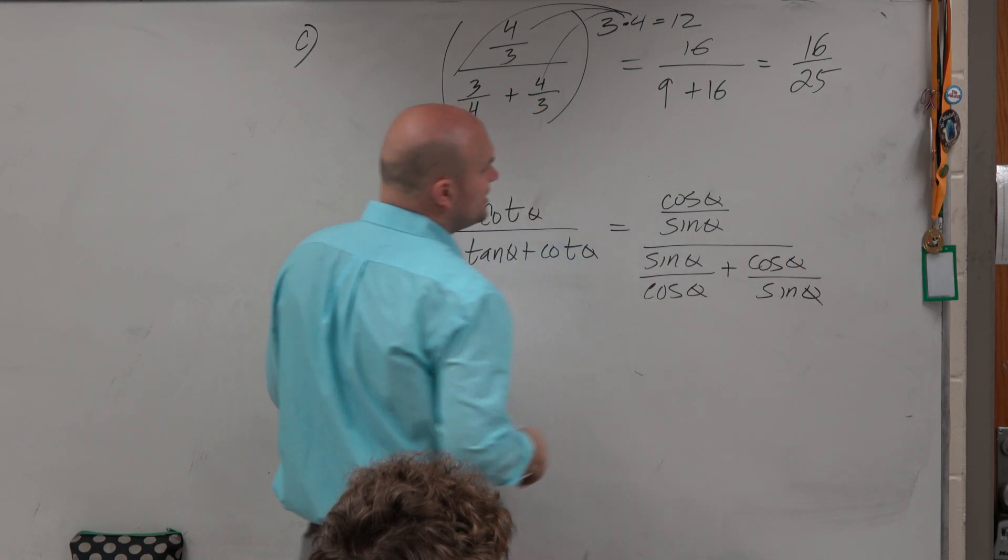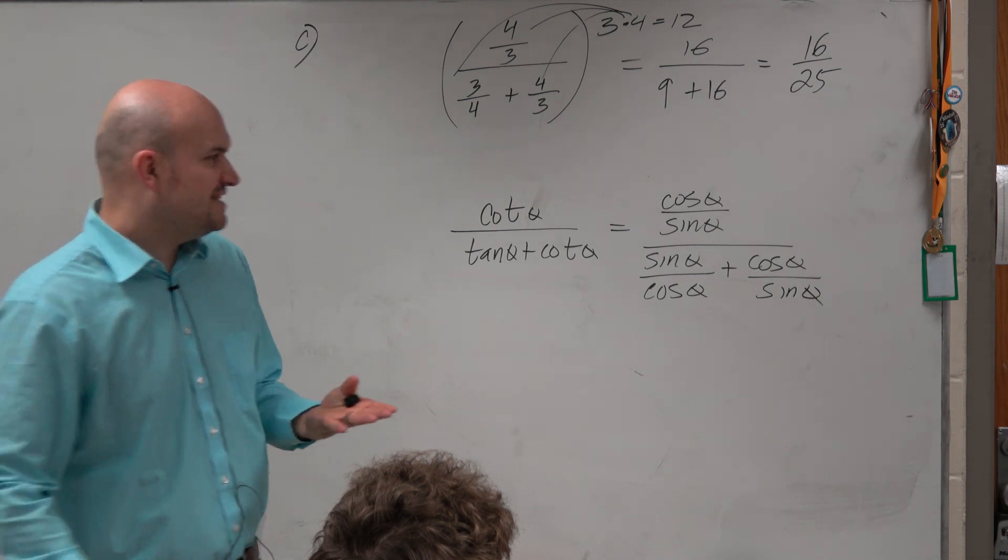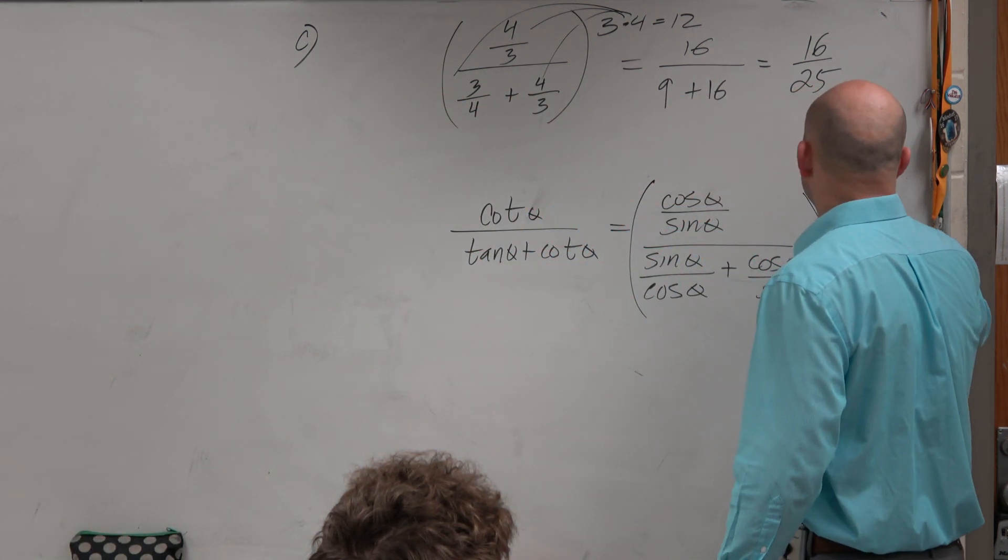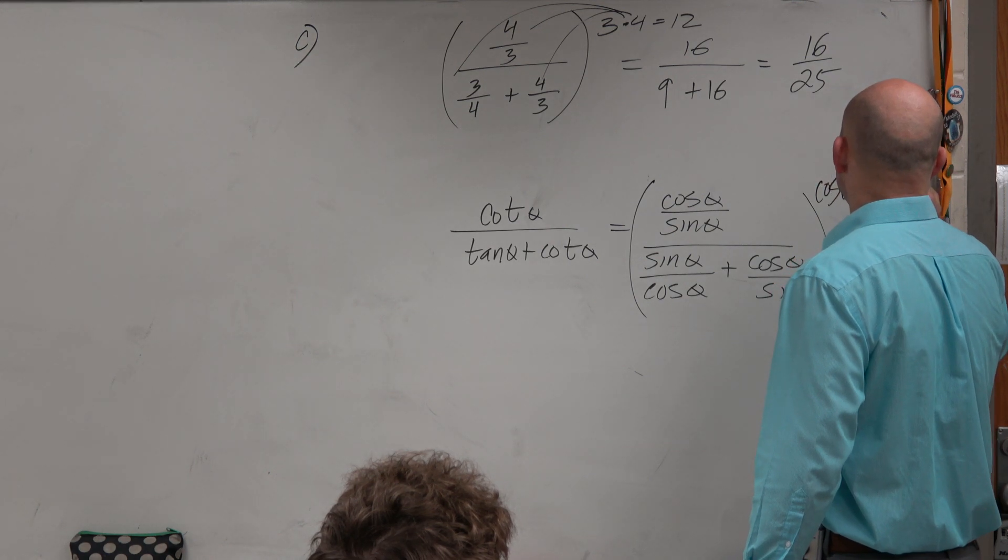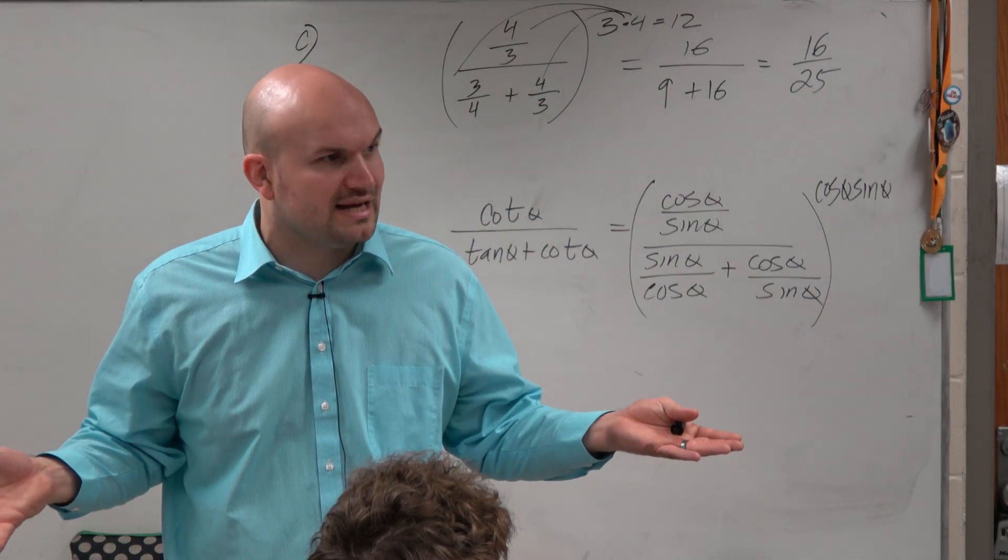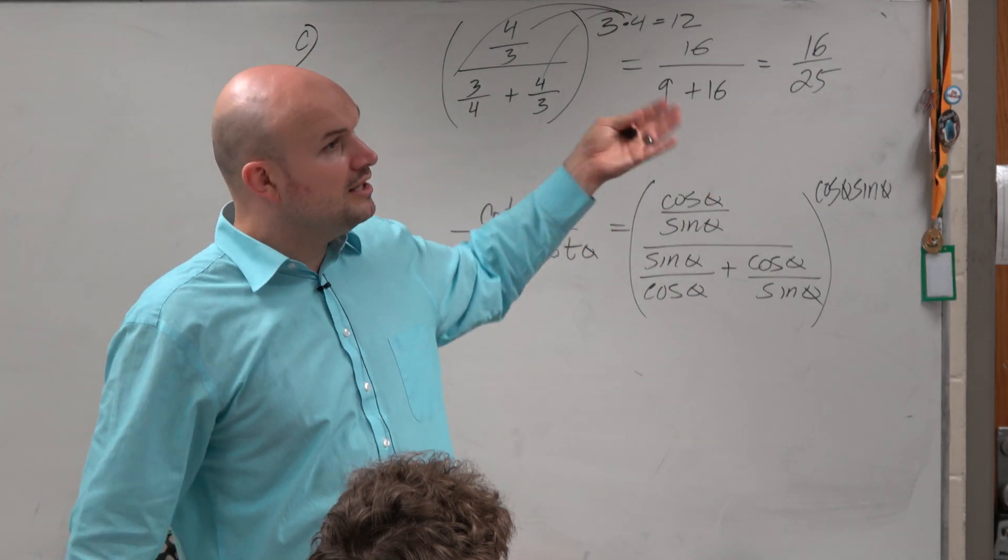So by converting to sines and cosines, I see that, well, you know what, I can eliminate these by a common denominator of cosine of theta, sine of theta. Unfortunately, I can't simplify the product of cosine of theta, sine of theta, like I could 3 and 4. But that's OK.